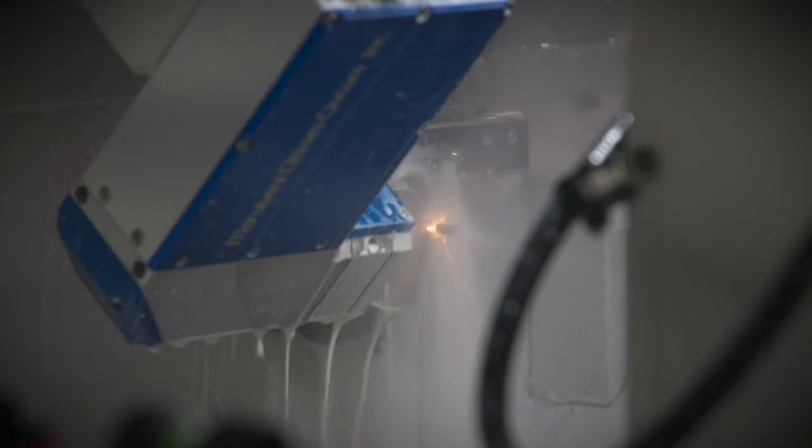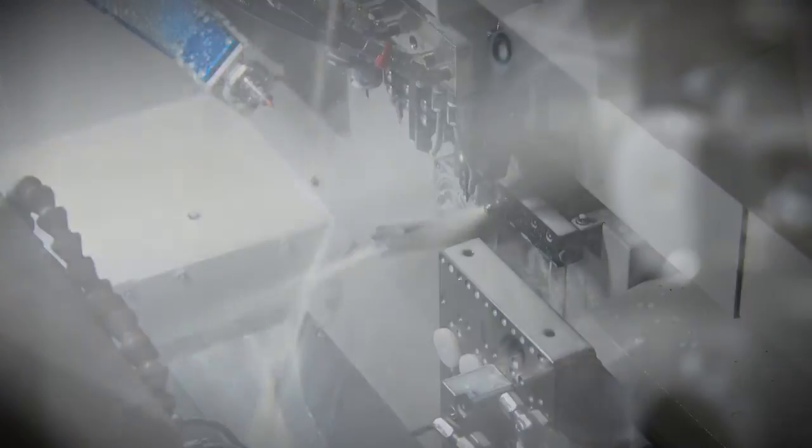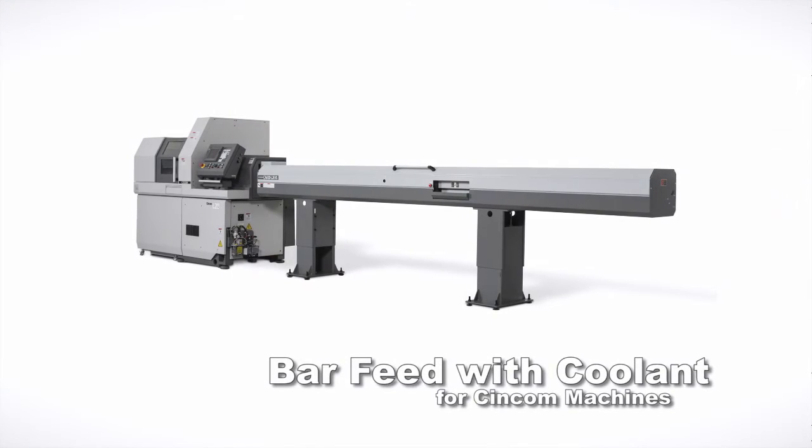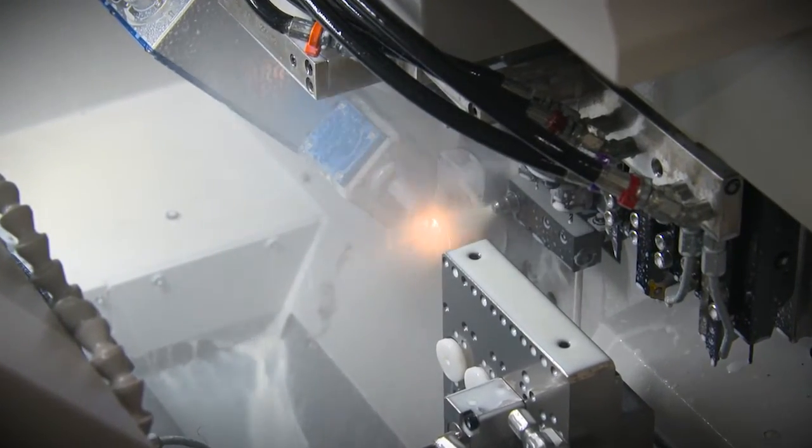The laser head assembly is liquid tight, so it's capable of operating while high pressure coolant is flooding the workpiece during the machining process. Internal air pressure protects the lens and internal components. High pressure coolant that is used during the cutting process also feeds coolant through the tubing material in the auto loading bar feed system. This provides a flushing of dross or chips that are created during the laser cutting process.